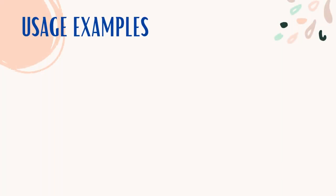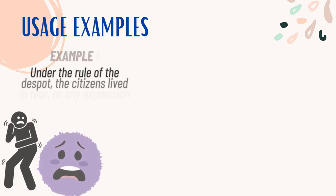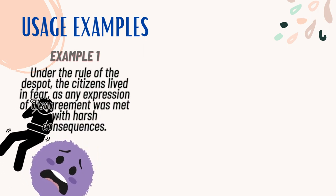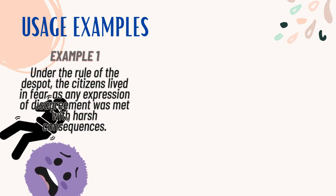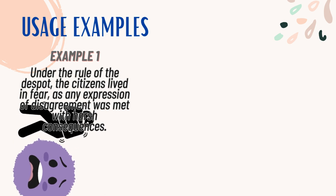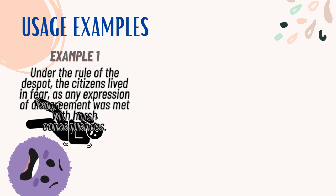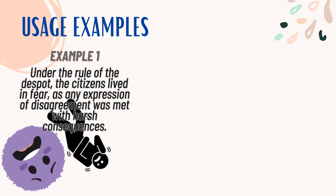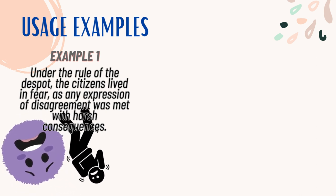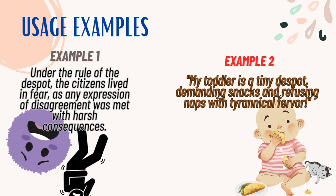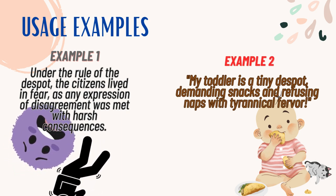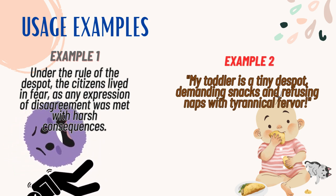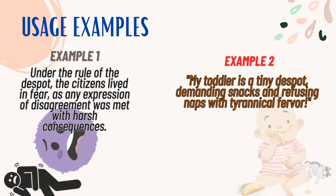Usage examples. Example 1: Under the rule of the despot, the citizens lived in fear, as any expression of disagreement was met with harsh consequences. Example 2: My toddler is a tiny despot, demanding snacks and refusing naps with tyrannical fervor.